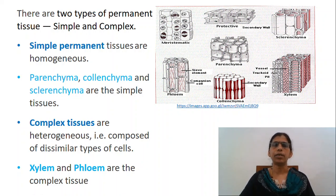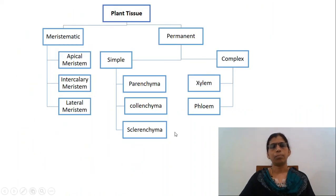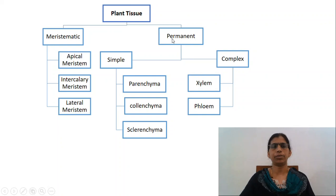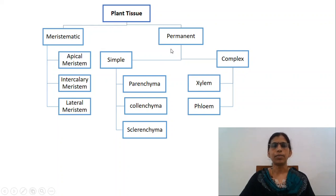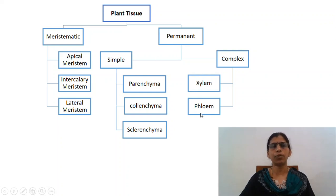Looking into the types of tissues, plant tissues broadly are categorized into two types: meristematic and permanent tissues. Apical meristems, intercalary meristems and lateral meristems are the types of meristems. Permanent tissue can be simple or complex. Parenchyma, colenchyma and sclerenchyma are types of simple permanent tissue, while xylem and phloem are the types of complex permanent tissues.